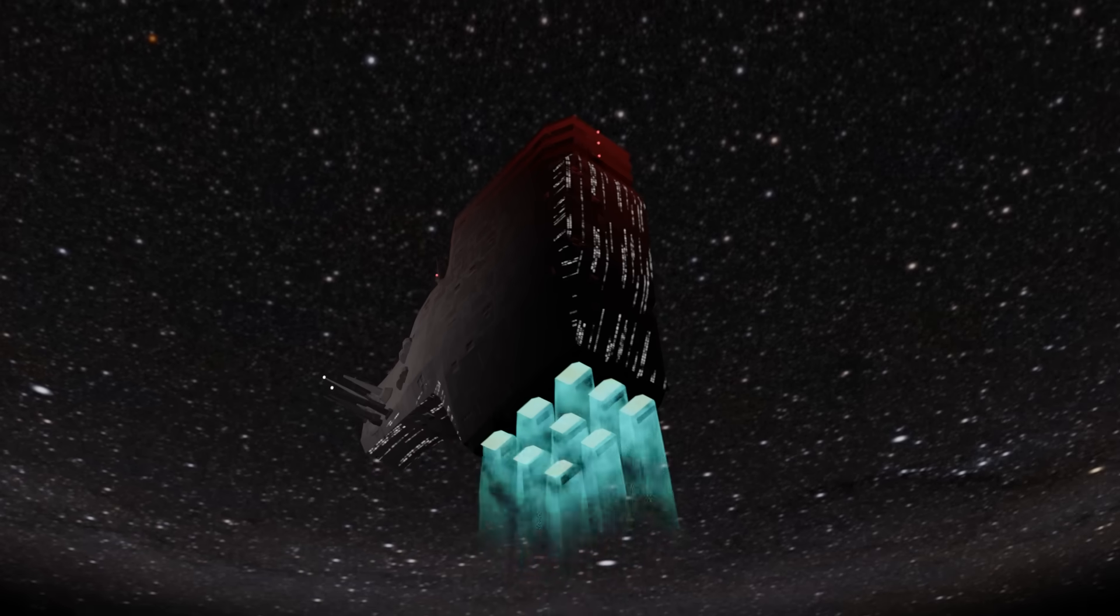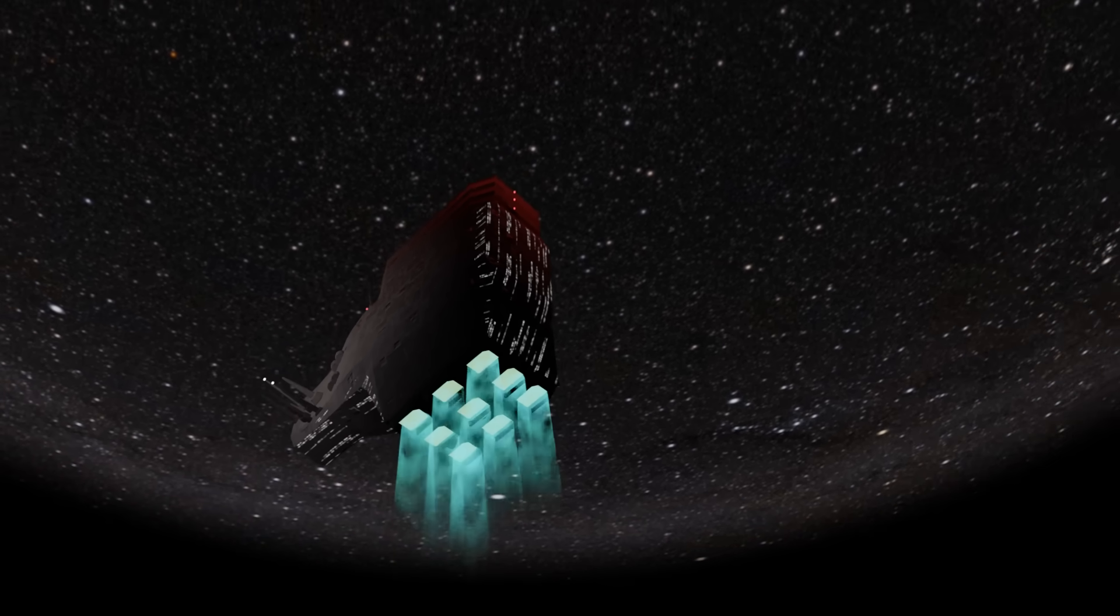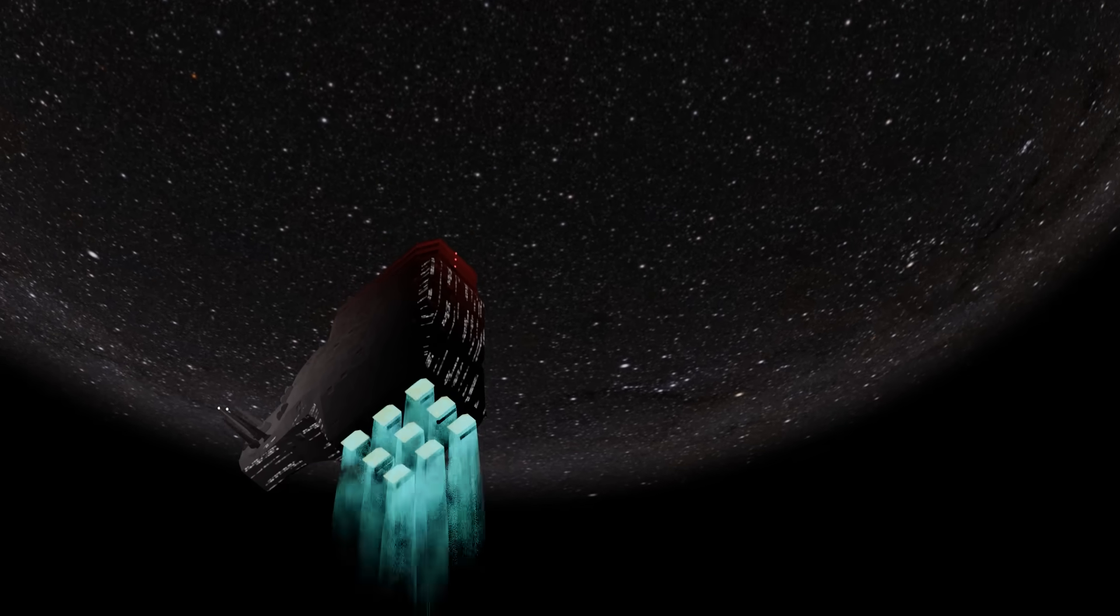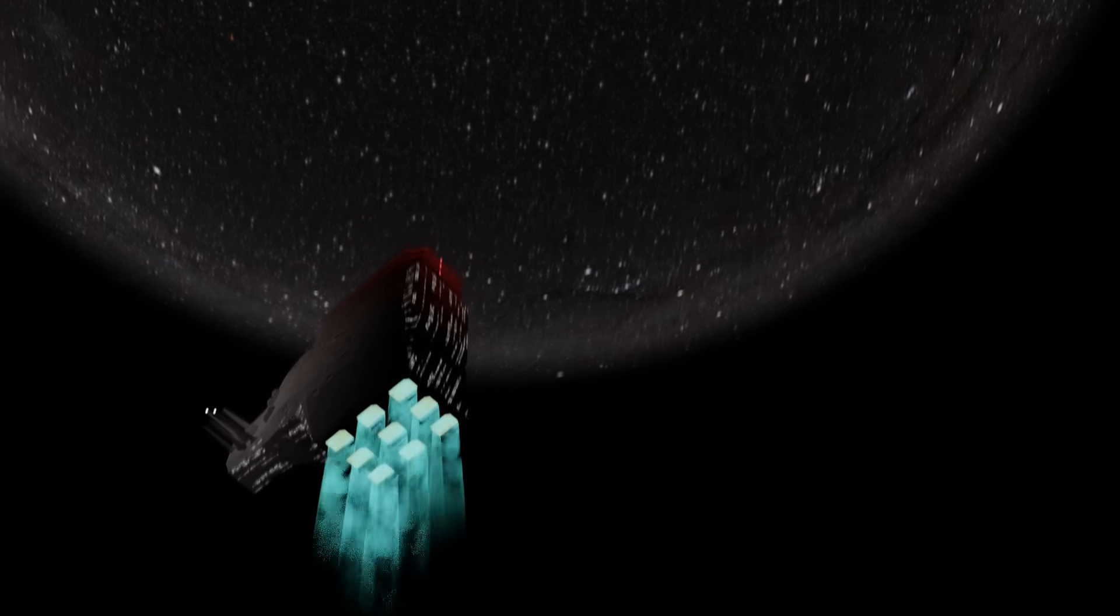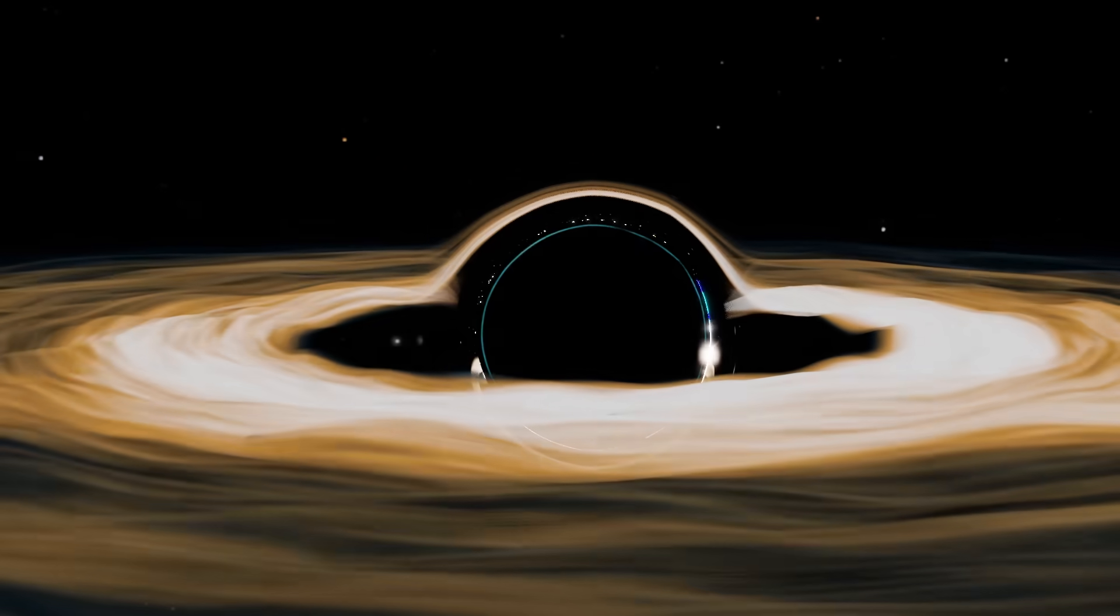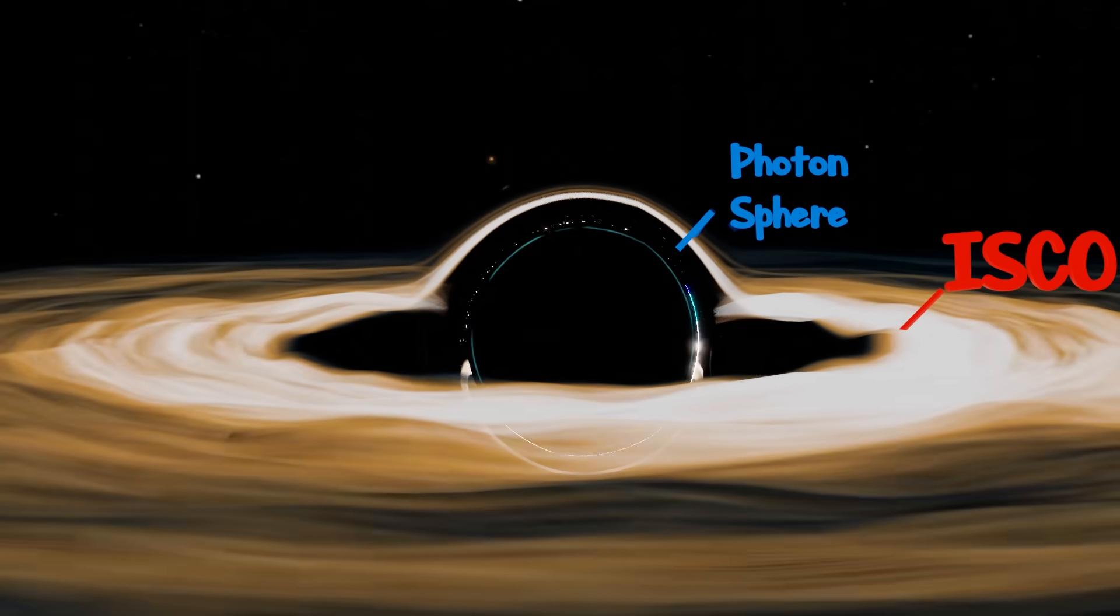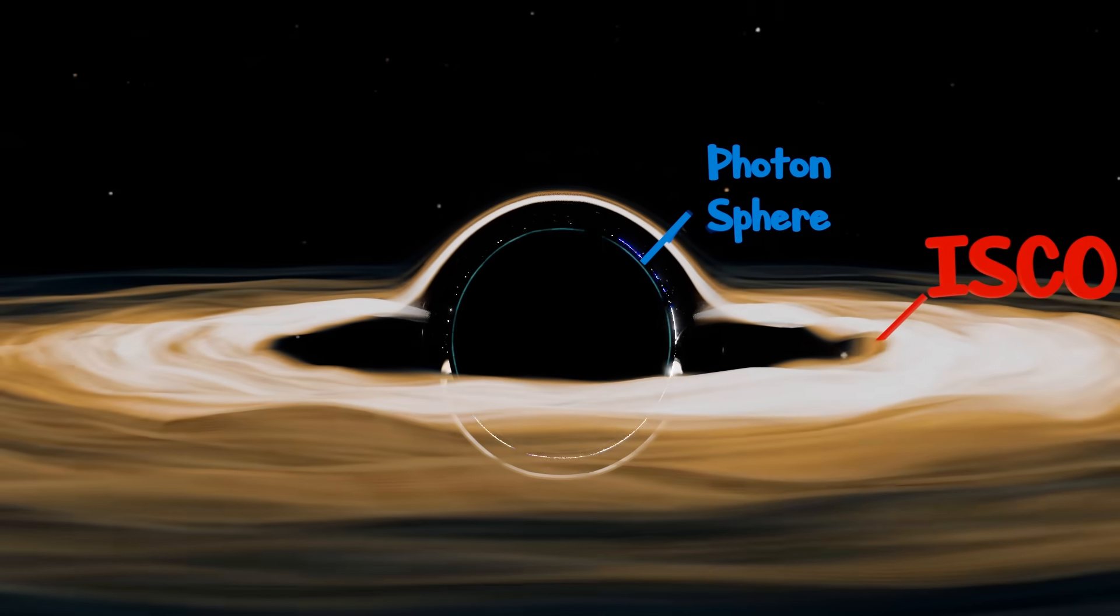The further we go, the more light bends away from us, and our window of the universe above shrinks. This creates a bit of a conundrum. How do we know when we've reached the event horizon? Unlike the ISCO and the photon sphere, there's no tangible boundary we can point at and say, ah, there it is.